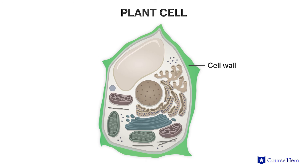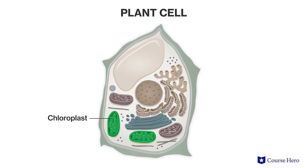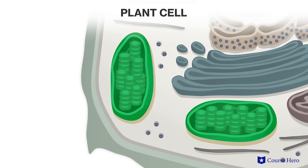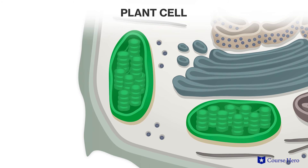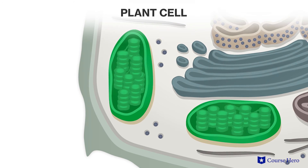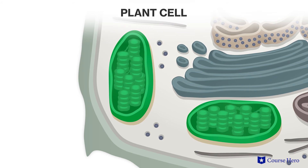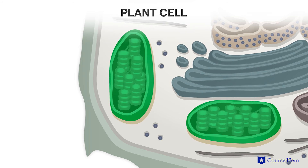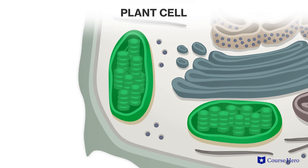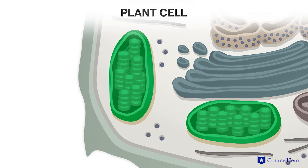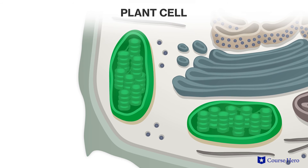In addition to mitochondria, plants possess an additional energy-processing organelle, the chloroplast, which is the site of photosynthesis. Chloroplasts have a smooth outer membrane and groups of stacked membrane sacs with chlorophyll, the pigment that makes leaves green and that absorbs light required for photosynthesis to take place.